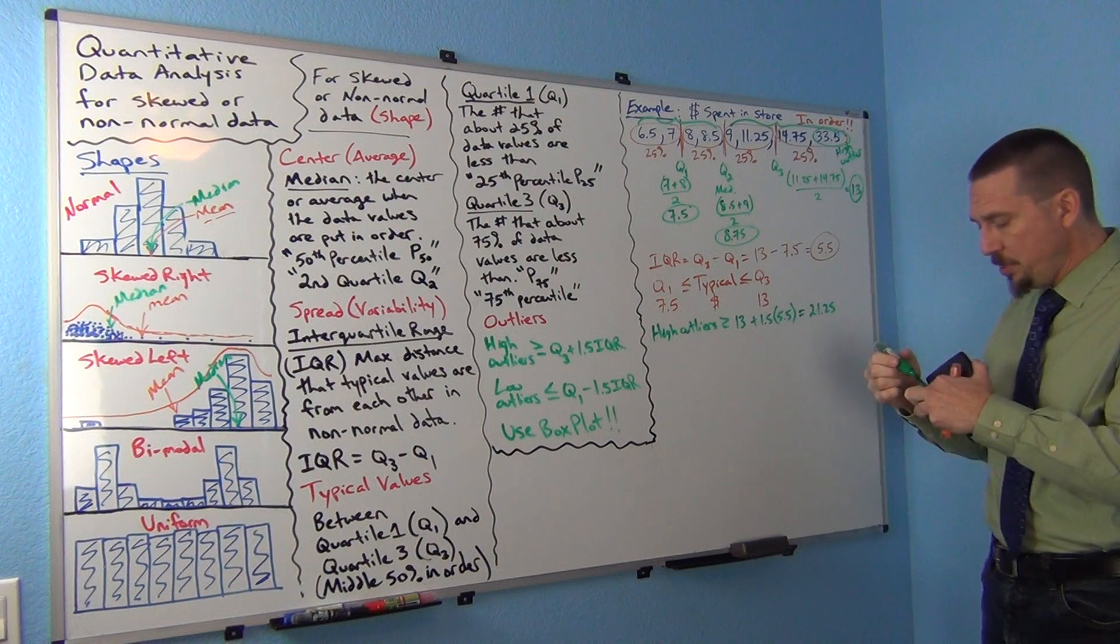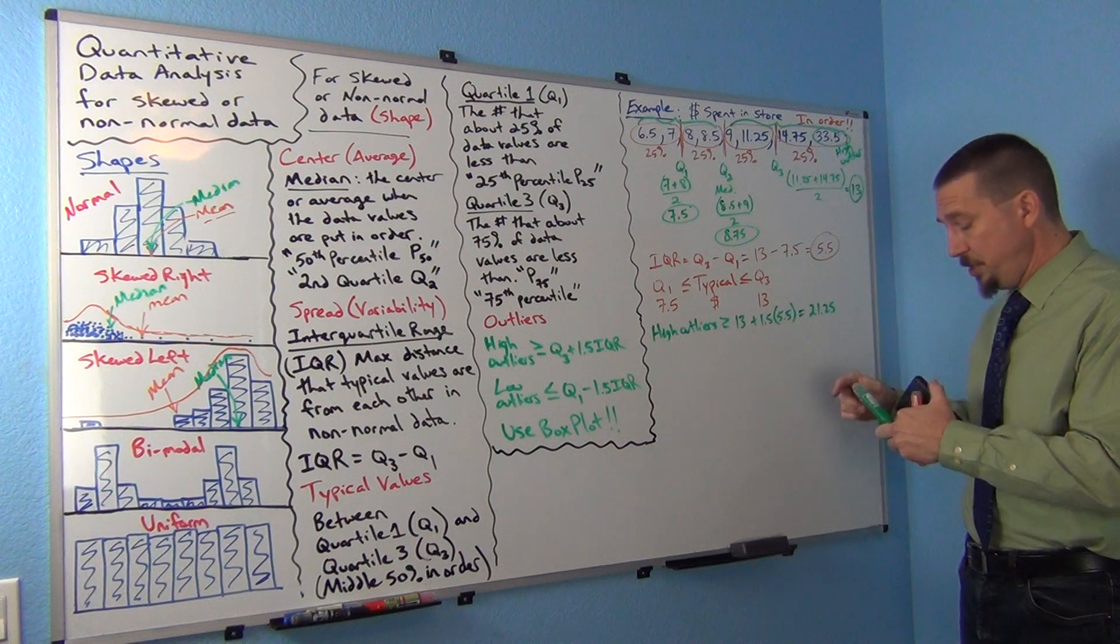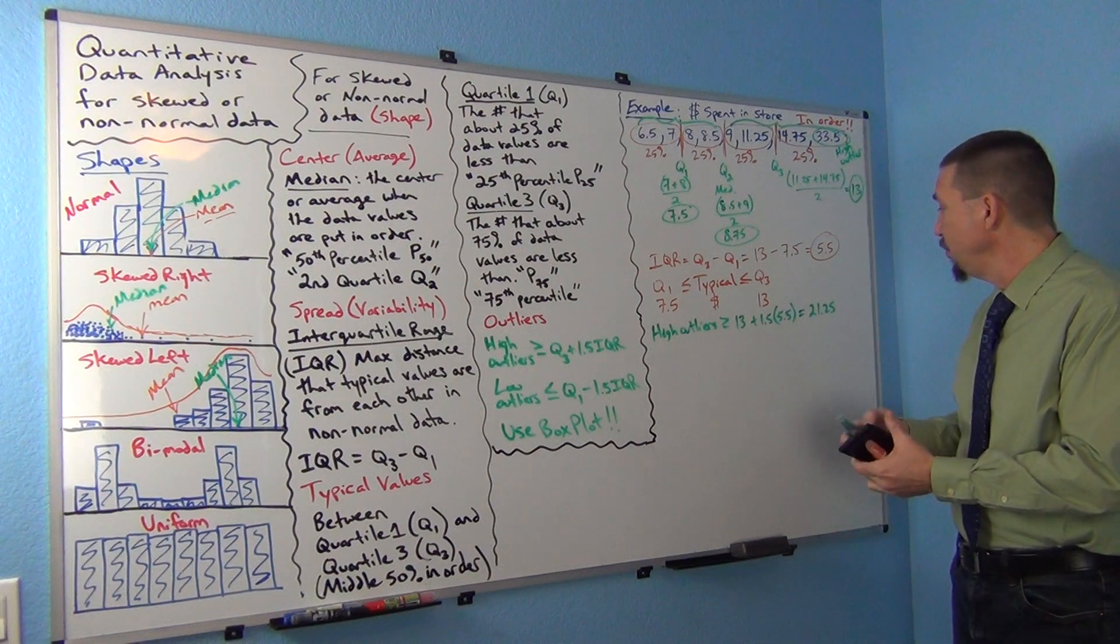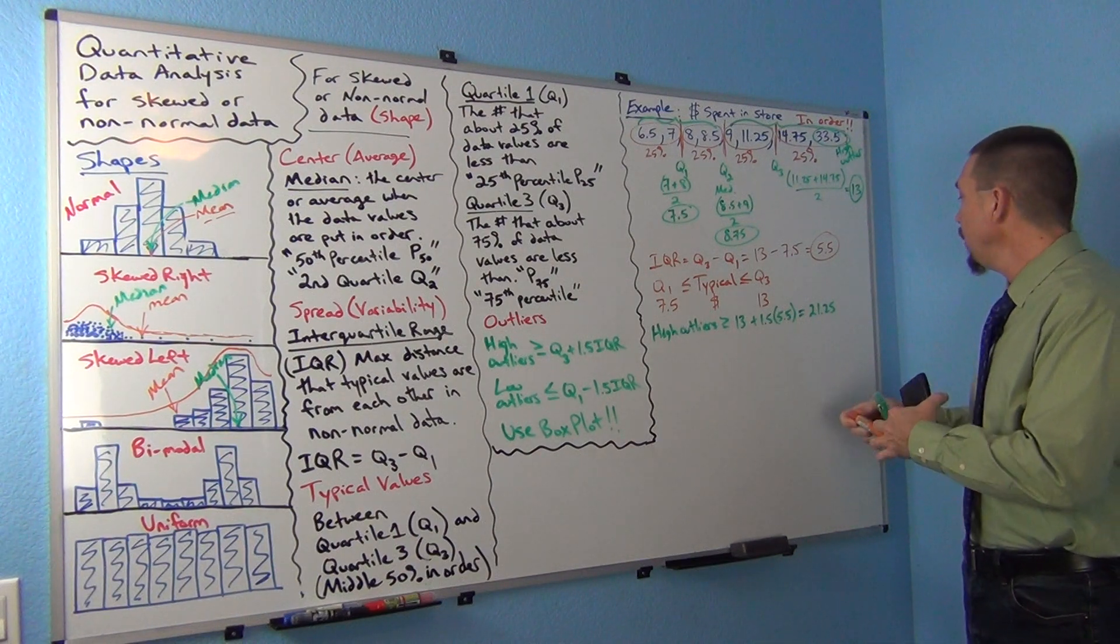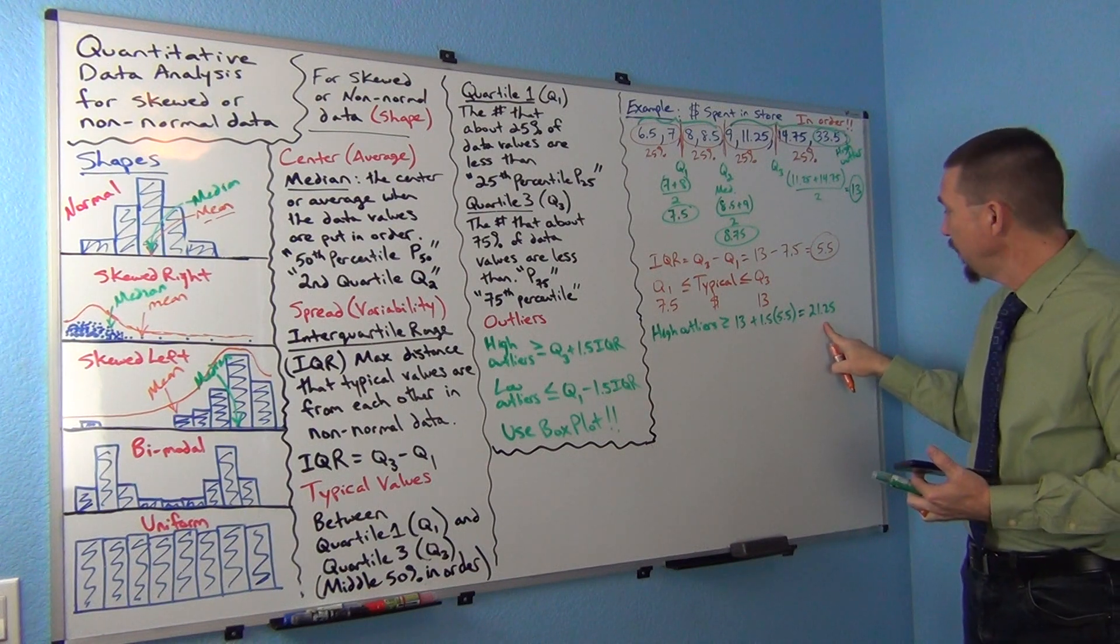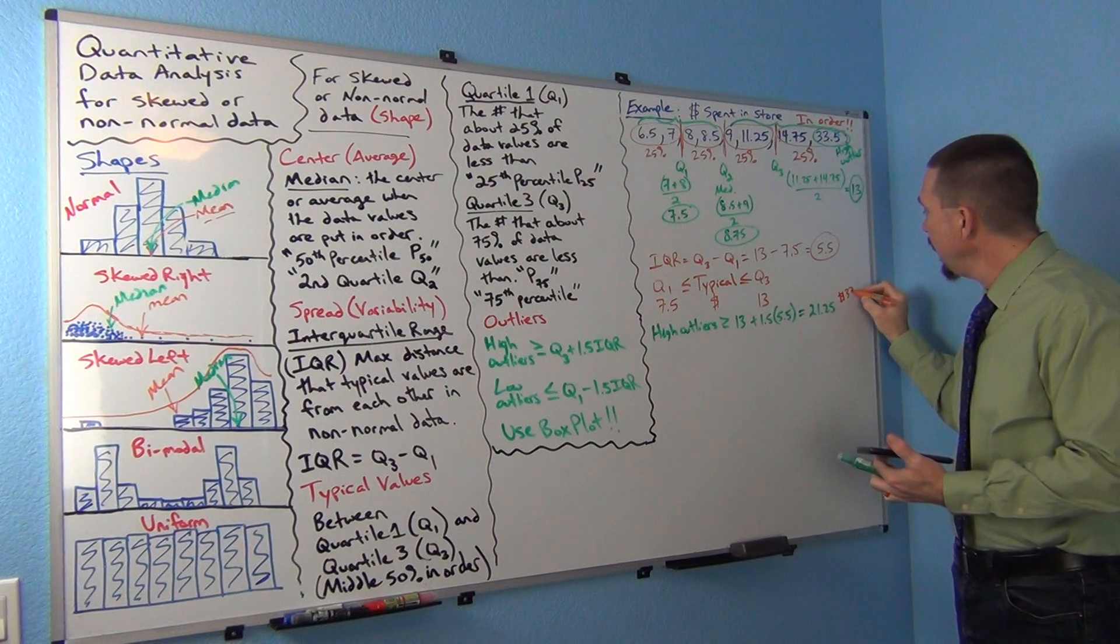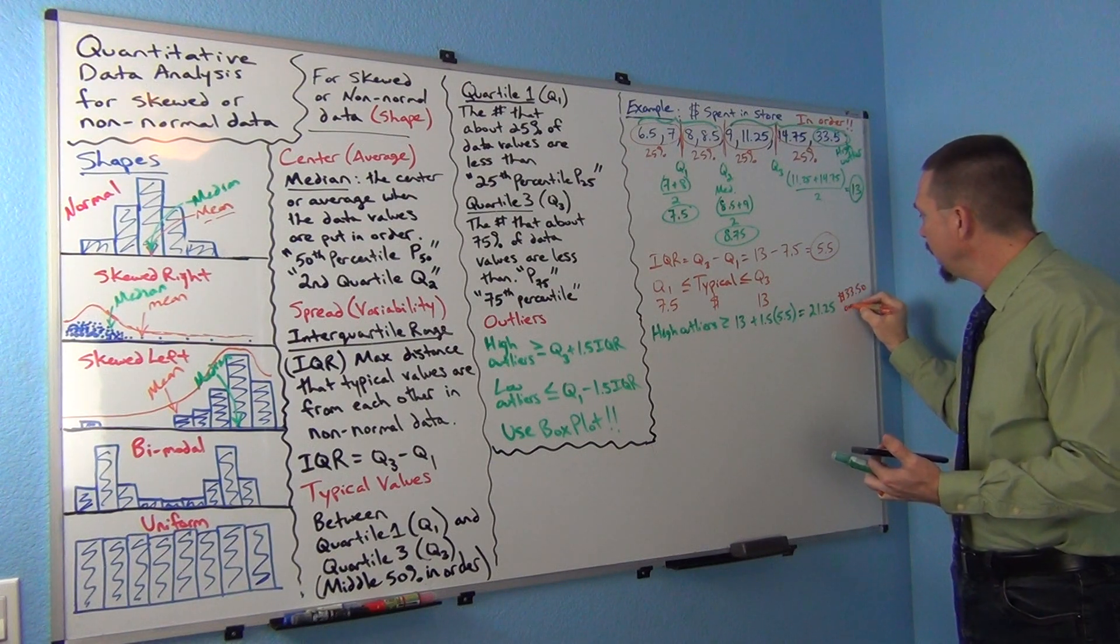So this tells me that the one data value that was above the outlier cutoff, 21.25, is now considered an unusual value. So there was no values that were exactly $21.25, but I do know that $33.50 in the actual data is an outlier.